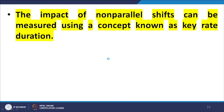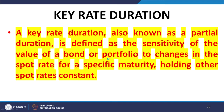The impact of non-parallel shifts can be measured using the concept of key rate duration. A key rate duration, also known as partial duration, is defined as the sensitivity of the value of the bond or portfolio of bonds to changes in the spot rate for a specific maturity, leaving all other spot rates constant. You identify certain special rates and evaluate the percentage change in bond price with respect to each.